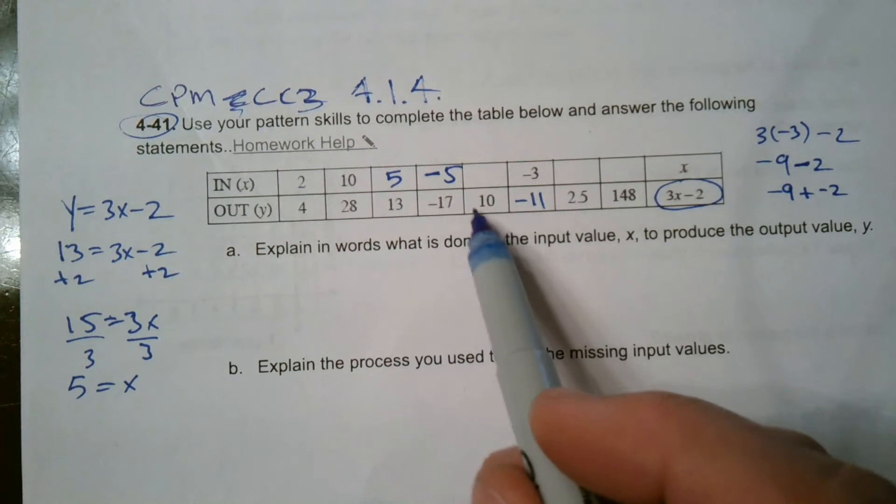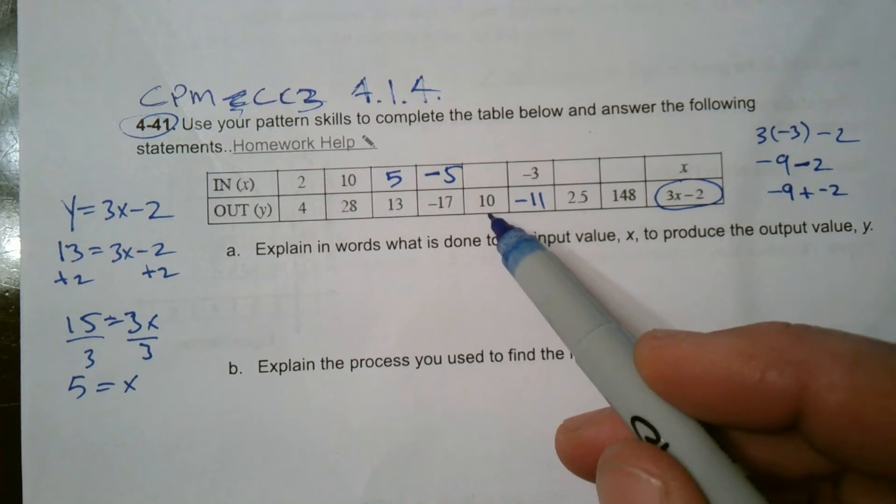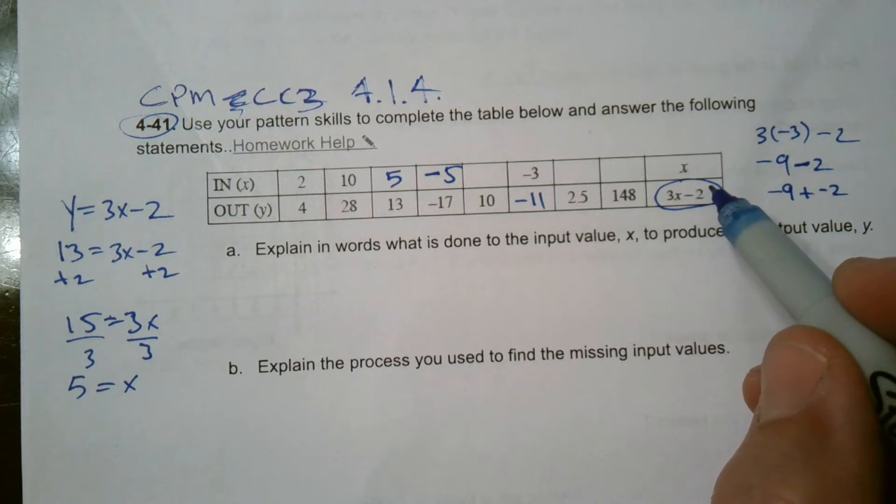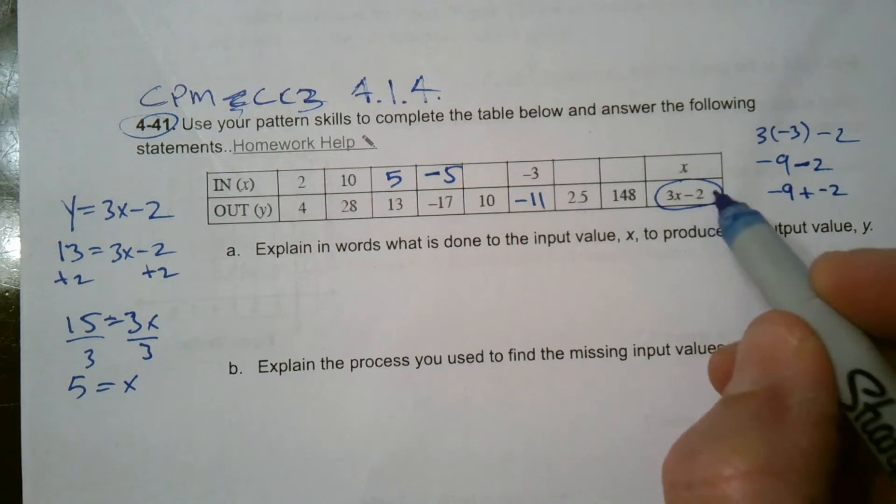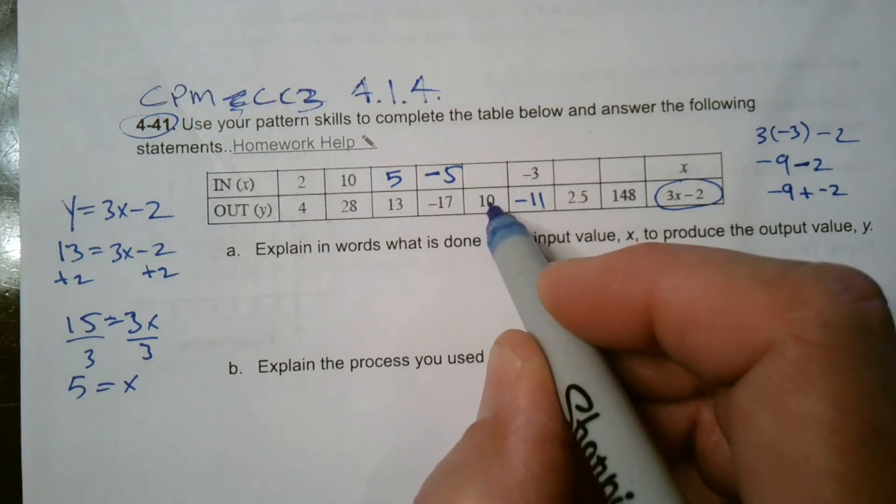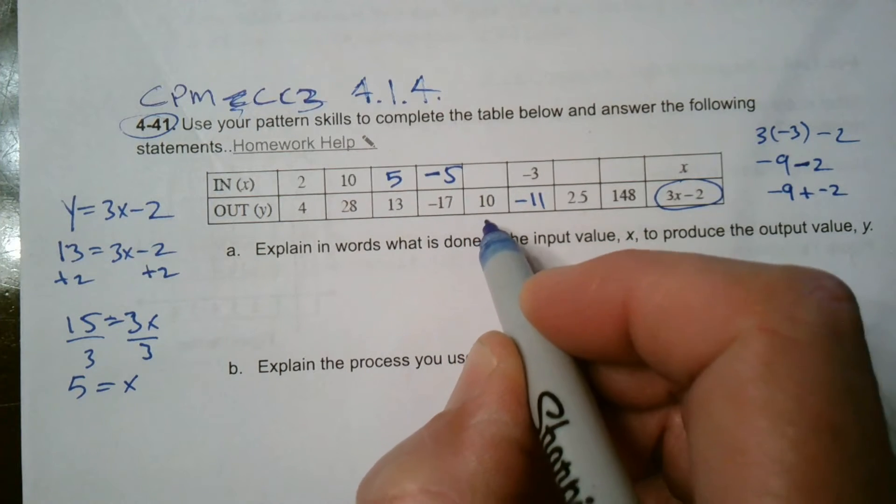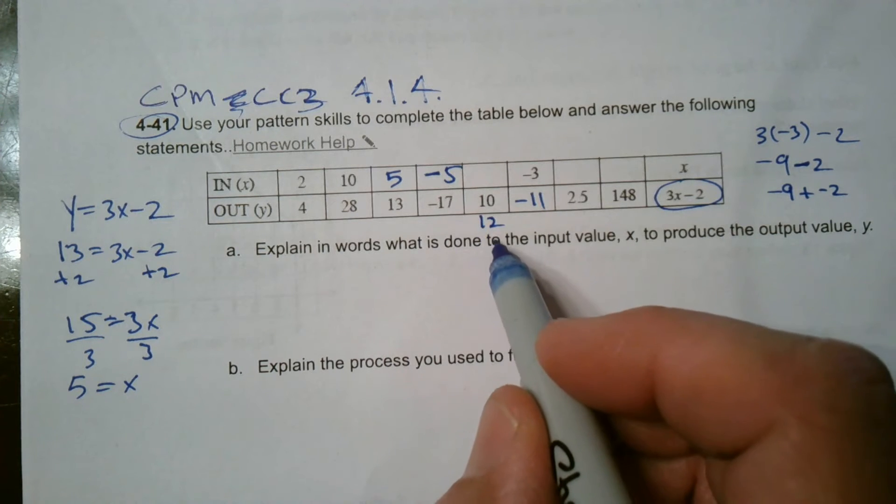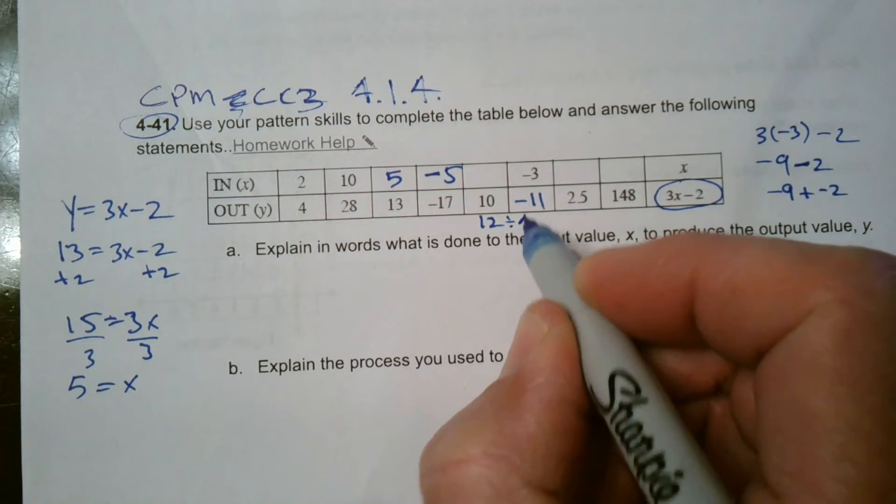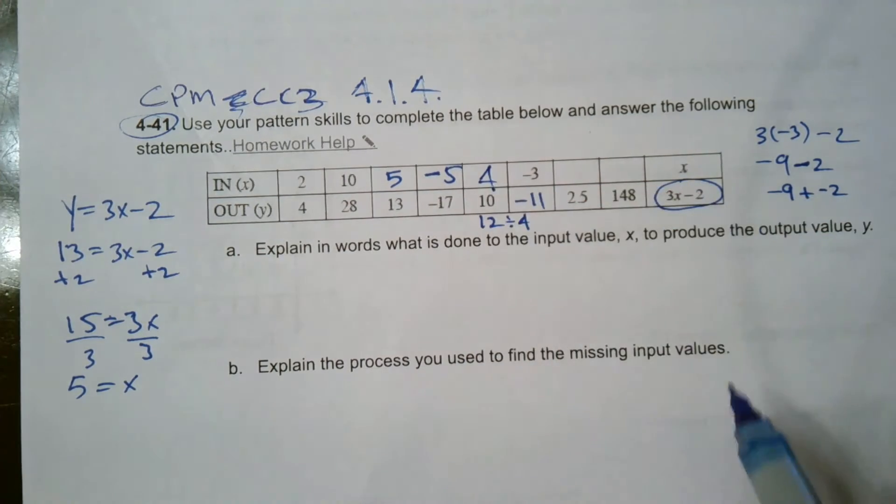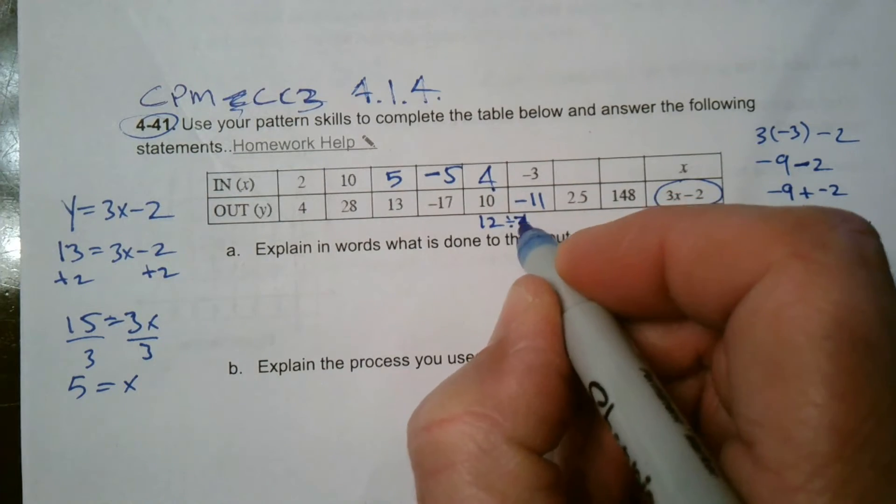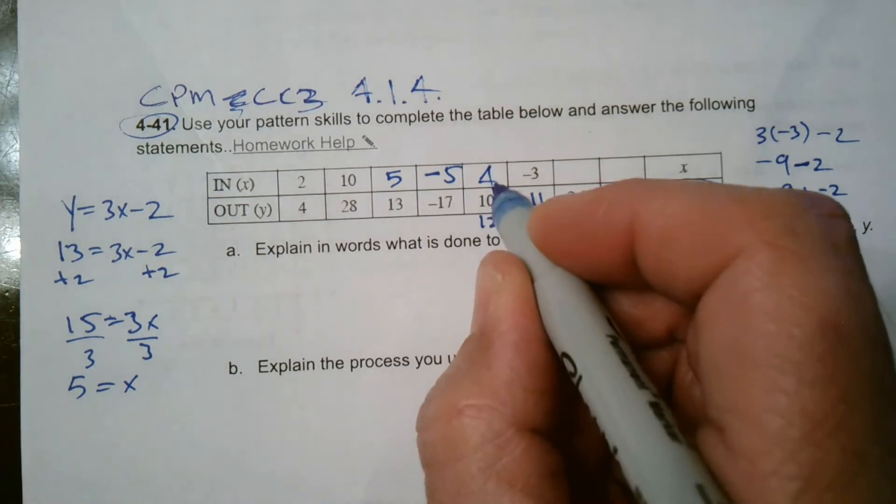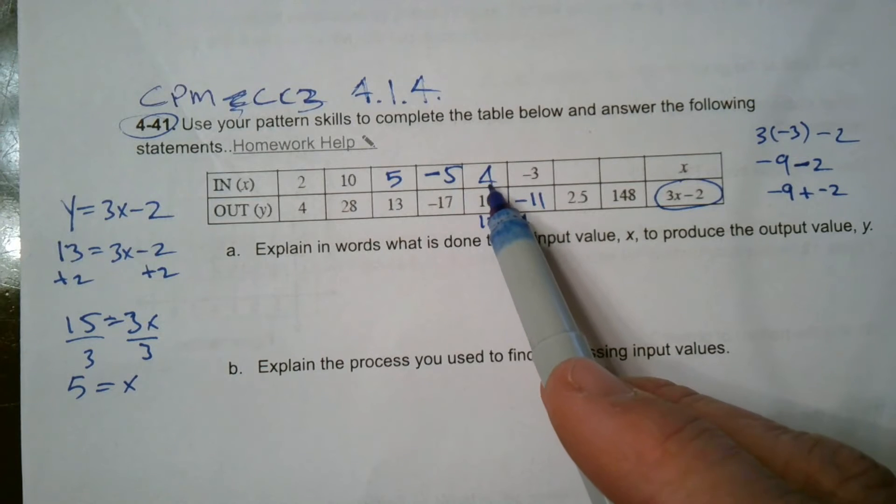So then we do it again with the 10. So a couple of things you can do. You could work backwards. I could say add instead of minus two, add two. So if I say 10 plus two, I get 12. And then instead of three times the X, I'm going to divide by three. 12 divided by three, so then divide by three and I get four. Divide by three, I do get four. So four is the X. Four is the input that gets the output of 10.